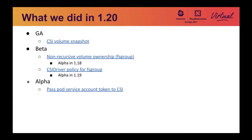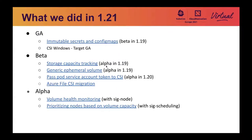Next, I will talk about what we did in the 1.21 release. In 1.21, we have immutable secrets and config maps moved to GA. This feature allows users to specify the contents of a particular secret or config map that should be immutable for the lifetime of the object. For such secrets and config maps, kubelets will not watch for changes to update mounts for their pods, so that will reduce the load on the API server.